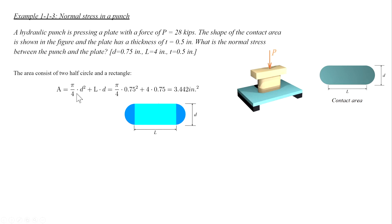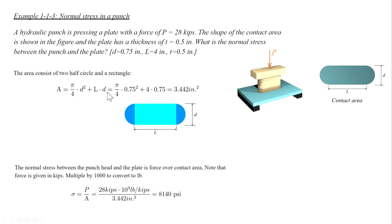The contact area consists of two half-circles and a rectangle. So the area is the area of one full circle plus the area of a rectangle. To determine stress, we divide force over area. Because the force is given in kips and we want stress in psi, we multiply the force by 1000 to convert to pounds. The answer is 81 psi.